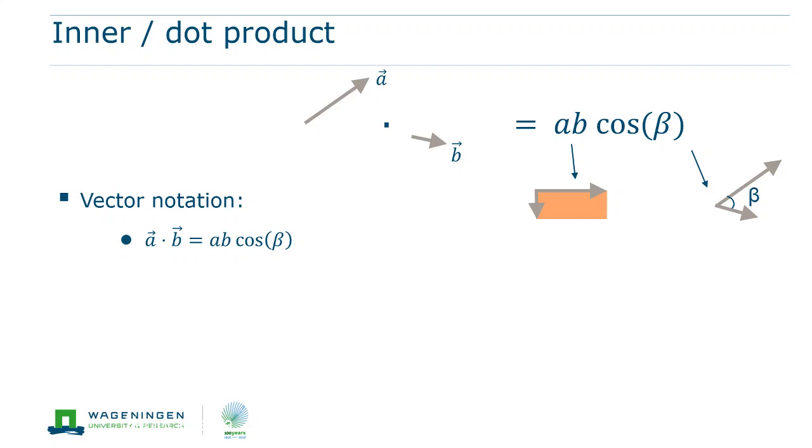The result of the inner product of vectors a and b is the product of the length of a and b, and the cosine of the angle between the two vectors. This result consists of scalars only, and so the outcome of the inner product is a scalar. Hence, another name that is sometimes used for this type of multiplication is the scalar product.